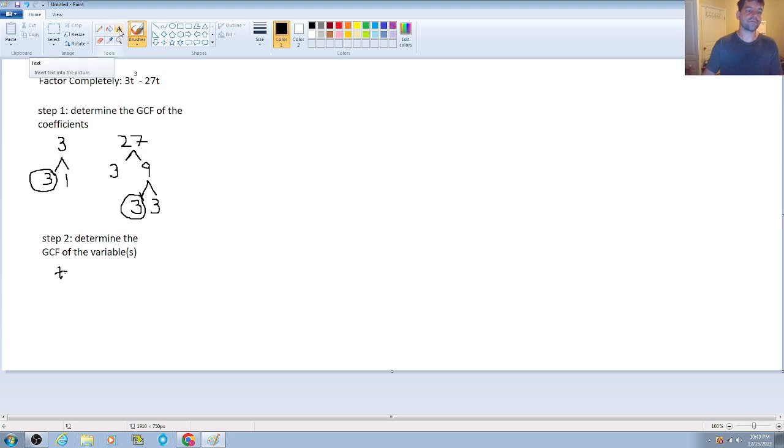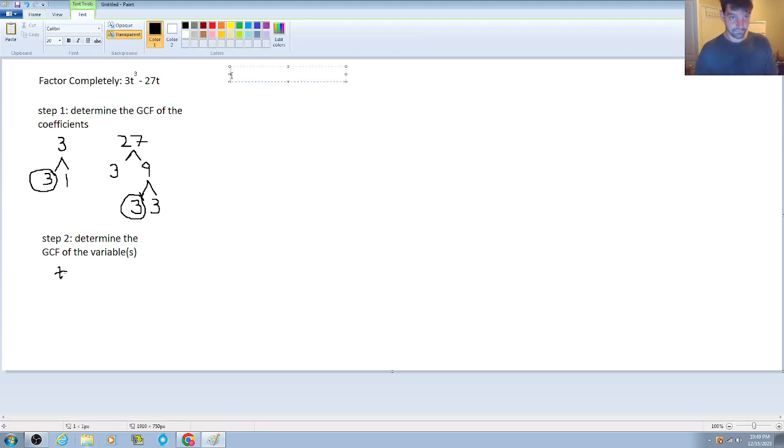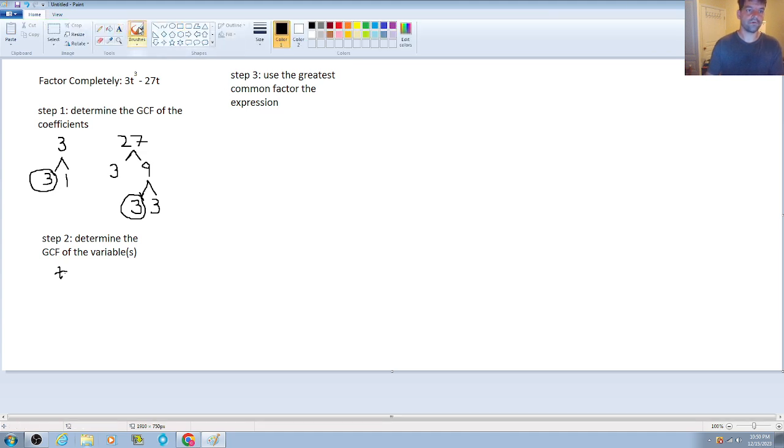So step three is going to be to factor out the greatest common factor from the expression. Let me do it up here. Okay, so I'm going to take 3t as my greatest common factor. And then remember,